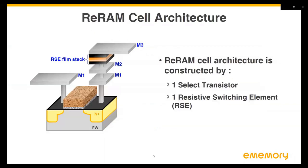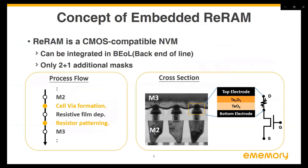The RRAM cell is constructed with a 1T-1R architecture, which includes one select transistor and one resistive switching element. The resistive switching element is located between two metal layers, Metal 2 and Metal 3. From the RRAM cell architecture, we know the RRAM cell is integrated in the back-end process. This is one virtue of emerging memory because it doesn't alter the front-end process while building the memory cell. On this page, I am going to show you the detailed process flow and the TEM cross-section.